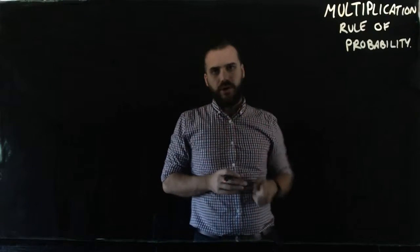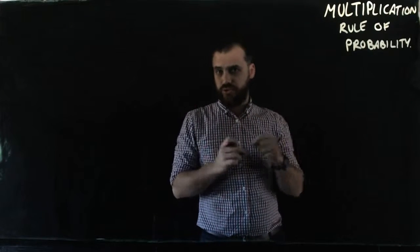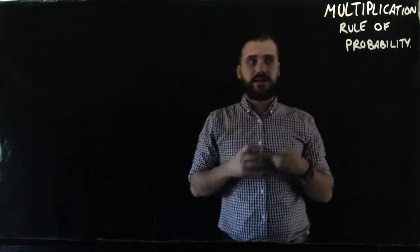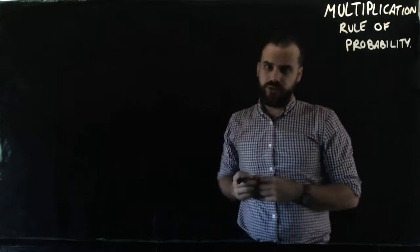I wanted to talk about the multiplication rule of probability. I've already talked about this before with tree diagrams, but I wanted to simplify this and compare it to a real-life example.